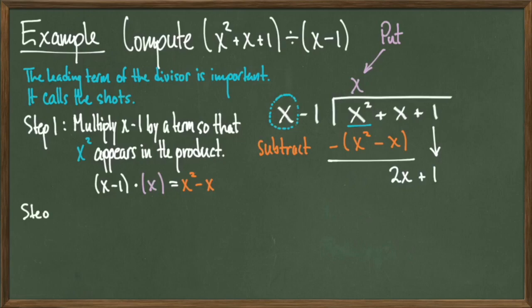Now 2x is our new target. So in step 2, the goal is to come up with something to multiply our divisor by so that a 2x appears in the product. If we choose 2 itself, notice that x minus 1 times 2 gives a product of 2x minus 2. Since we chose 2, we will add it to our quotient up at the top.